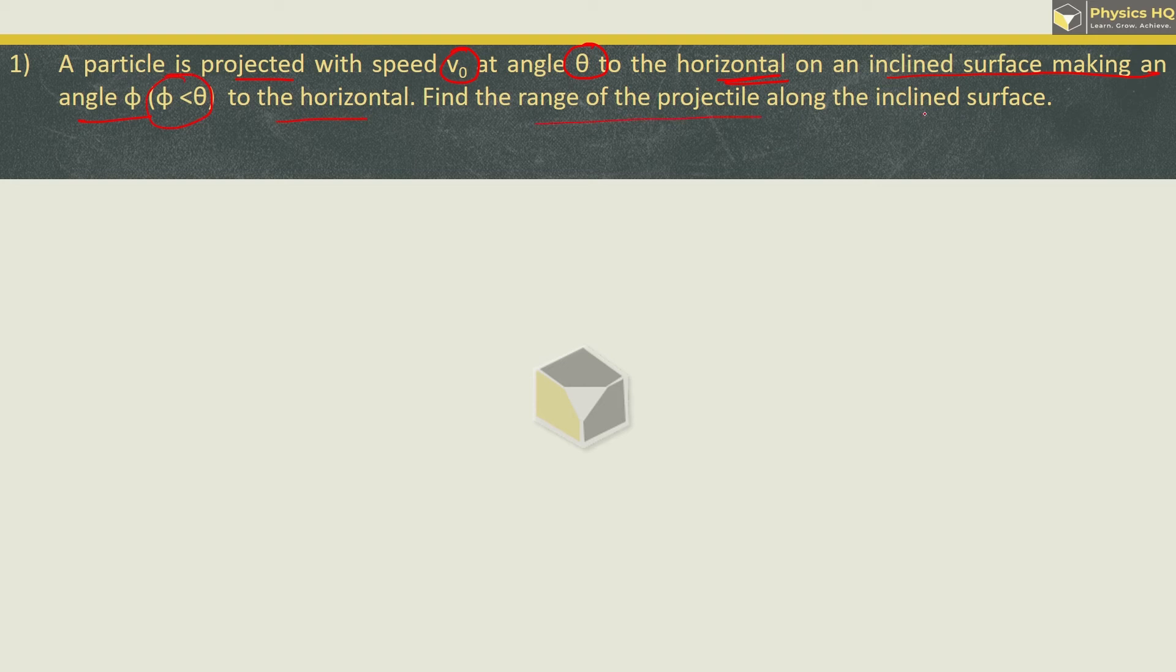Now let us understand basic projectile motion. Let us say this is the horizontal surface and a particle is projected with initial velocity v0. So what happens is that this particle will follow a parabolic path and go to the left. This angle they have said is equal to theta.